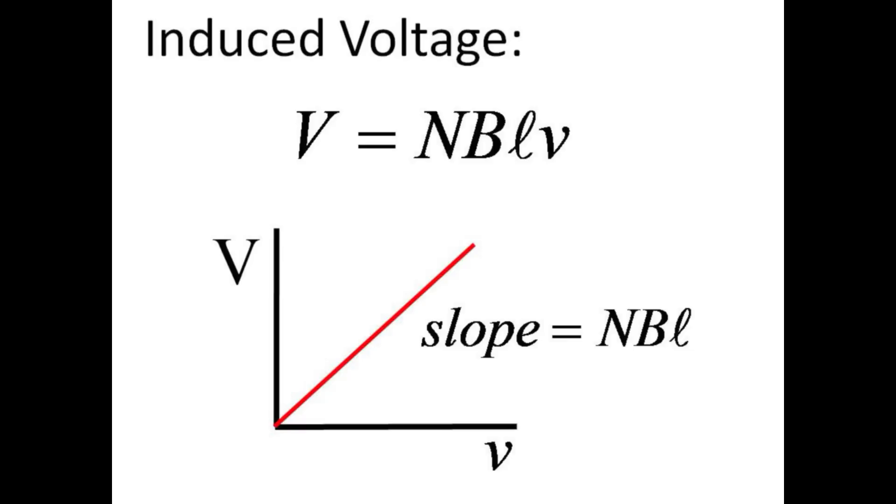We see that the induced voltage, capital V, is proportional to the velocity, small v, of the leading edge of the coil through the magnet.